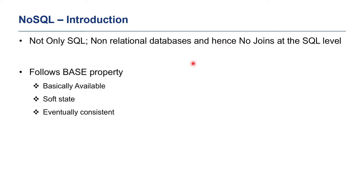When we talk about the eventually consistent property of NoSQL, there may be a little bit of delay when data is being written into the database. Whenever the data is being written and read by other users, they may experience a little stale data. This behavior can be observed in certain scenarios where stale data does not matter. For example, in social network sites, if I am posting a comment on a user's wall, it is perfectly fine if the other user sees the content with a little delay — maybe some milliseconds or seconds. But the data will be there eventually.